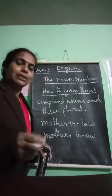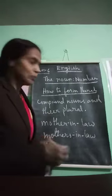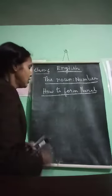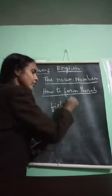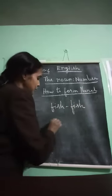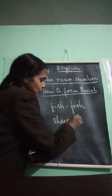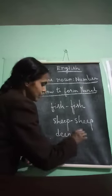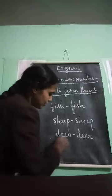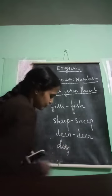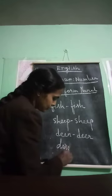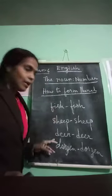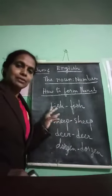There are some nouns which do not change — they remain the same in their plural form as well. For example: fish → fish, sheep → sheep, deer → deer. Both singular and plural forms are the same.